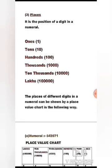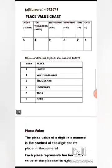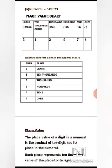Place is the position of a digit in a numeral, and here the places are written from smallest to largest: 1st is ones, 2nd is tens, 3rd is hundreds, 4th is thousands, 5th is 10,000, and 6th is lakhs. The places of different digits in a numeral can be shown by a place value chart. For example, numeral 5,42,671 is shown on the place value chart. The place of 5 is lakhs, 4 is ten-thousands, 2 is thousands, 6 is hundreds, 7 is tens, and 1 is ones.